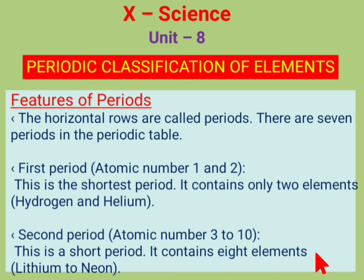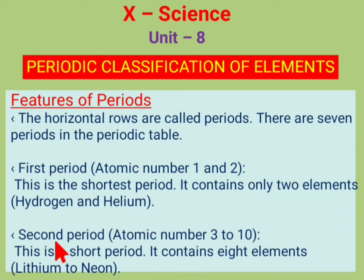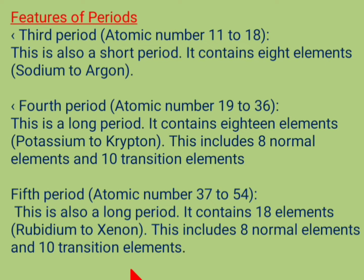What are the features of the modern periodic table? All the elements are arranged in the increasing order of their atomic number. The horizontal rows are called periods, and there are 7 periods in the modern periodic table. The first period is the shortest, containing only 2 elements: hydrogen and helium. The second period is also a short period, containing 8 elements from lithium to neon. The third period is also a short period, containing 8 elements from sodium to argon.